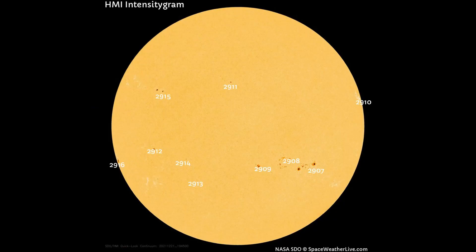This HMI intensity gram map, which shows the Earth-facing side of the sun, shows 10 sunspot regions can be observed. The M-class flares from today came from this region.